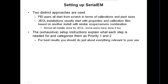Just a few things about setting up the program — there are two distinct approaches. For FEI users, they send me a questionnaire and I set up some starting property files, but they really start from scratch in terms of calibrations and pixel sizes that go in the property file. JUL installations usually start with a property and calibration file based on another installation from a similar combination of scope and cameras. Almost all these installations are done by JUL, but some users have done it themselves, and a guide has been written on how to start with those files and go through the calibration.